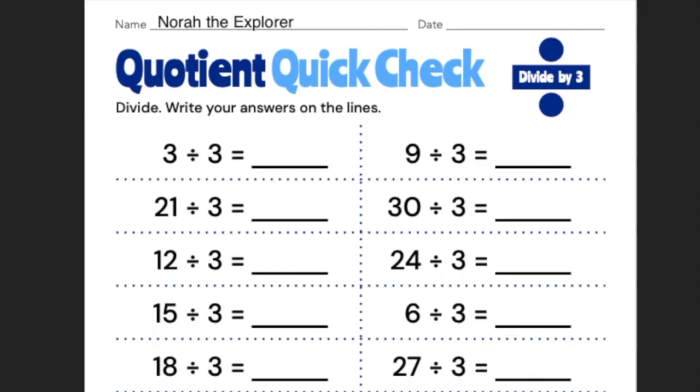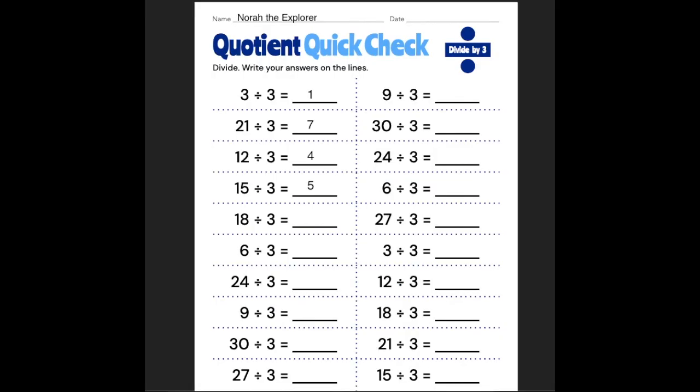Let's start with the first question. It's going to be really easy. 3 divided by 3 is 1. 21 divided by 3 is 7. 12 divided by 3 is 4. 15 divided by 3 is 5. 18 divided by 3 is 6.